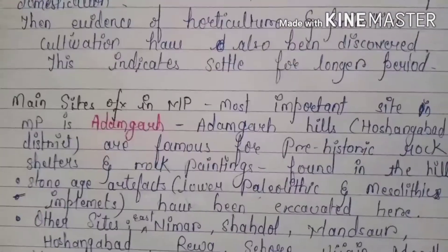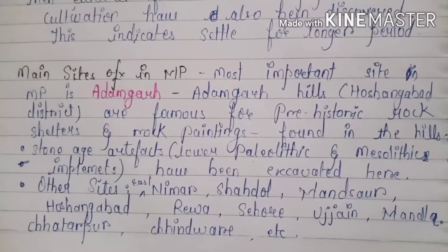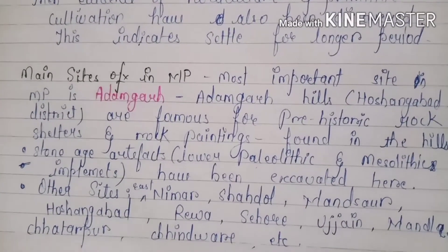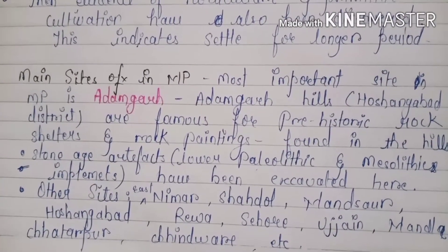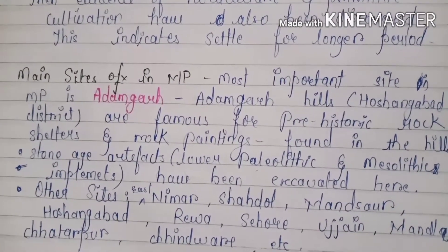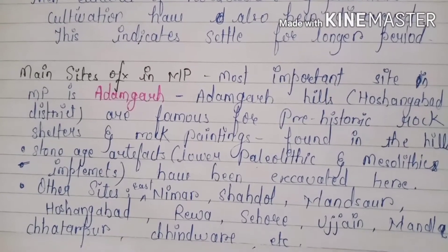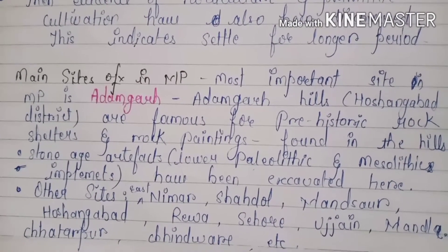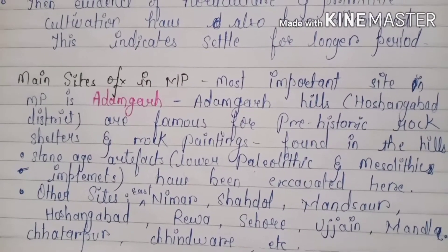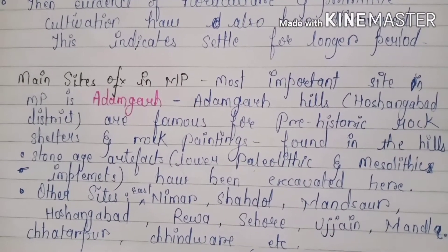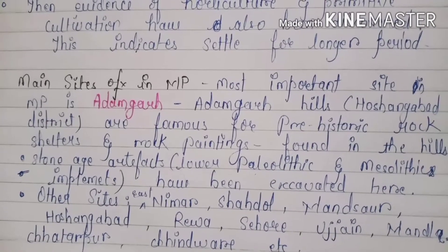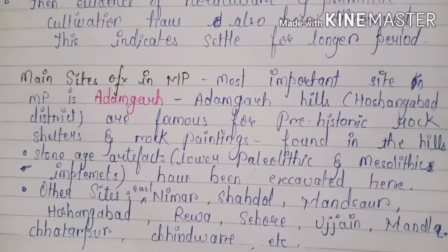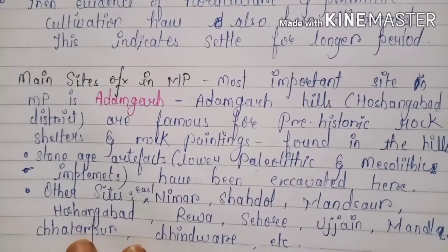The main Mesolithic site is Adamgarh Hills, located in Hoshangabad District. This area is used as prehistoric rock shelters and has rock paintings. Evidence of horticulture and primitive cultivation have also been discovered, indicating settlement for longer time periods.